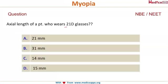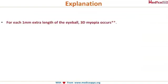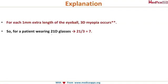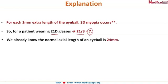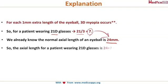Here is a worked example: find the axial length of a patient who wears -21 diopter glasses. Since one millimeter of extra length causes three diopters of myopia, divide 21 by 3, which equals 7 millimeters. The normal eyeball length is 24 millimeters, so add 7 to 24, giving an answer of 31 millimeters.